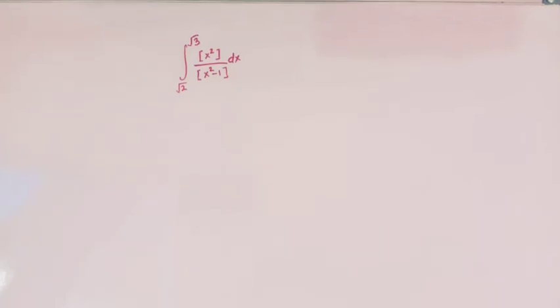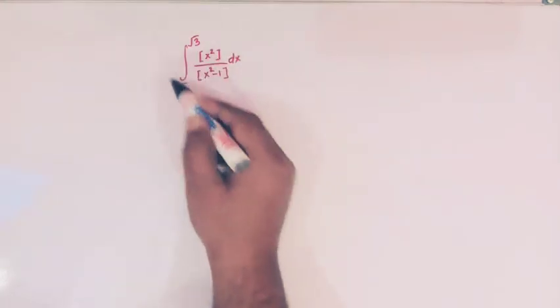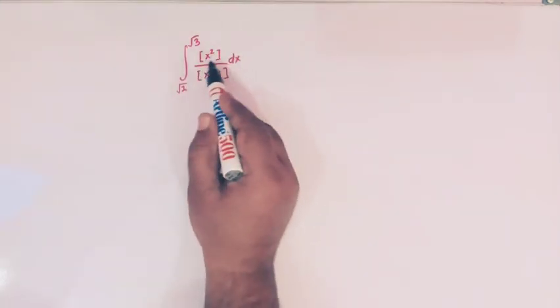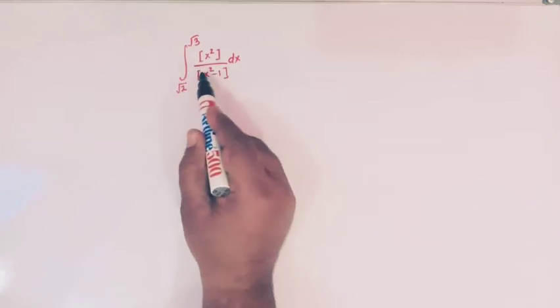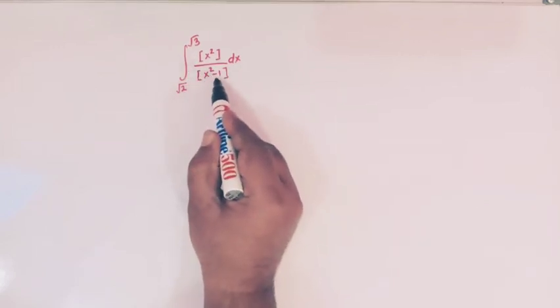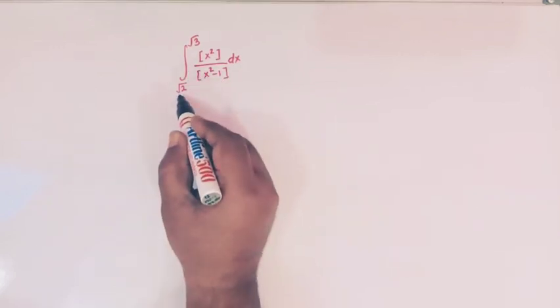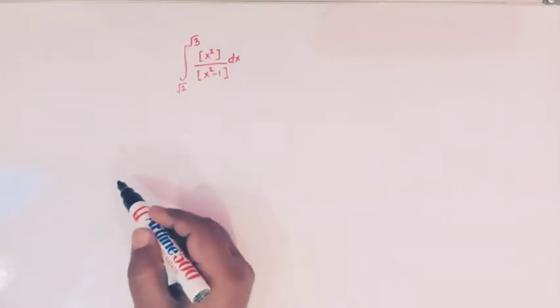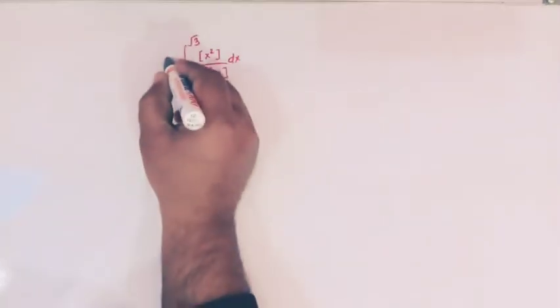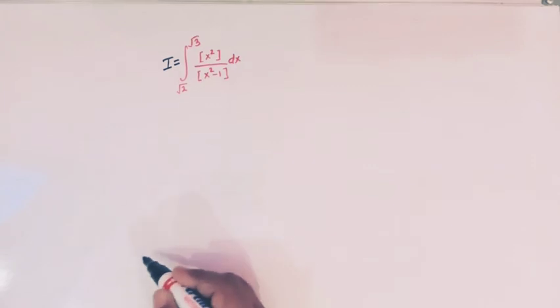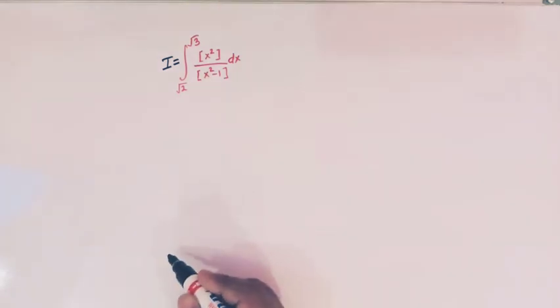Hello viewers, in today's class we are going to discuss one important definite integral involving the greatest integer function. We have to integrate the greatest integer of x square divided by the greatest integer of x square minus 1, from root 2 to root 3. Let us take this integral as I.